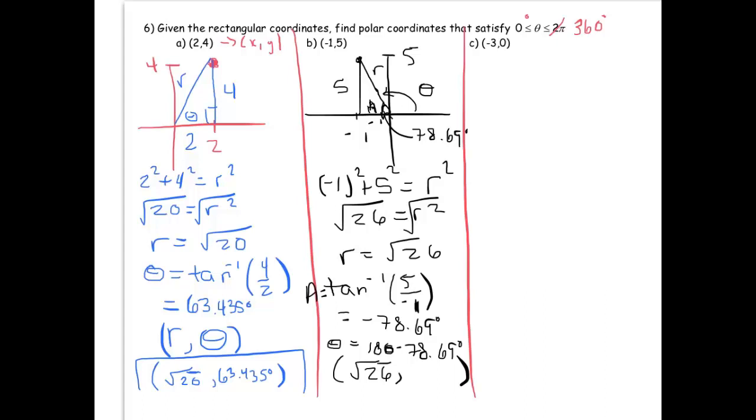So if we really want what theta is, theta is equal to 180 minus 78.69 degrees. Okay, and when you do that, you get 101.31 degrees. Alright, so just be thoughtful about that. And that should make sense, right? If you rotate 101.31 degrees, again, the name of the game is you're always facing the positive x-axis to begin. If you rotate 101.31 degrees and walk out root 26 steps, it will bring you to the point negative 1, 5 in rectangular coordinates.